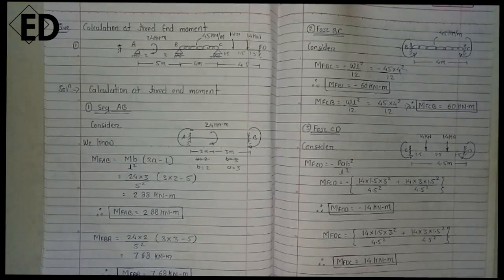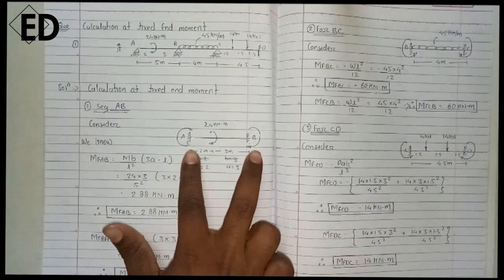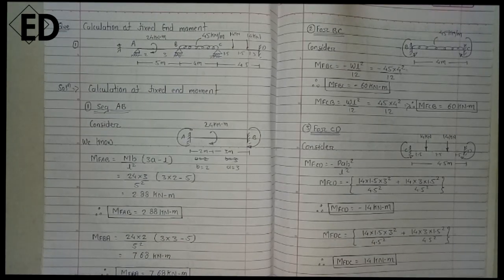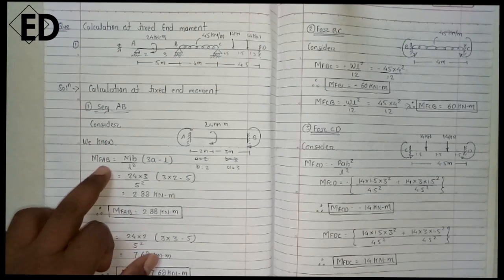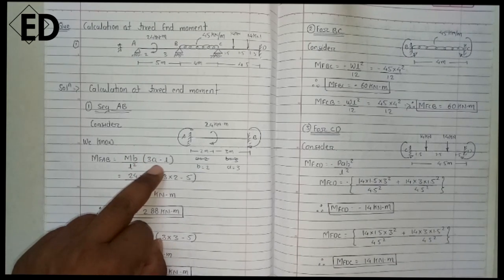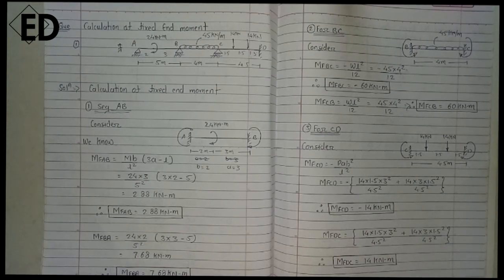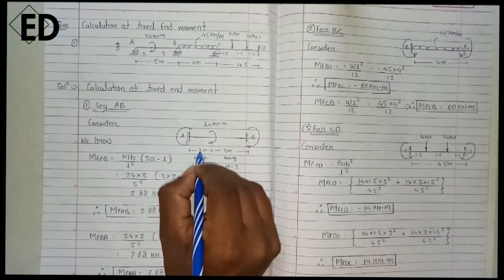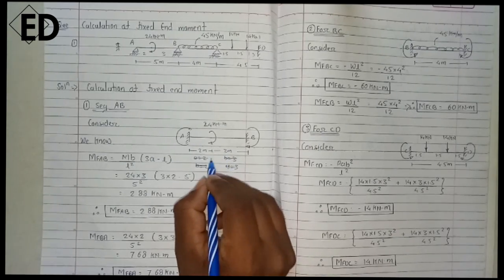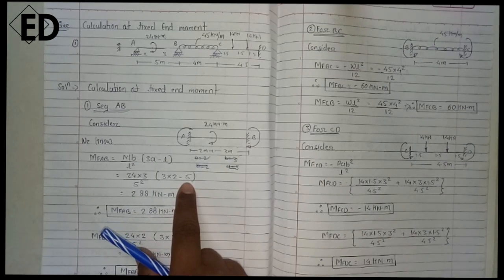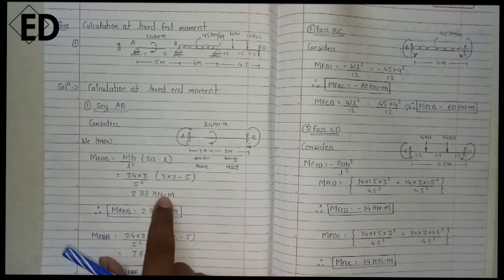Now we are considering span AB. Fixed end moment means the ends are fixed and we just have to calculate the moment at the end. It is very simple — just by directly using the formula seen earlier, that is M times B divided by L squared, into three times A minus three times B. Here A equals 2 and B equals 3, so by directly putting this value into the equation, we get 2.8 kilonewton meters.